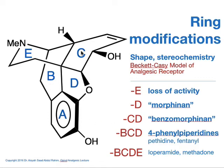If you take out rings B, C, and D, leaving the aromatic ring, the OH group, and also retaining the piperidine ring, this is called the 4-phenylpiperidine ring, and it gives two very clinically important morphine derivatives: pethidine and fentanyl. Pethidine is used in hospital for childbirth — it is the analgesic of choice for childbirth. Whereas fentanyl, due to its structure, promotes the penetration across the blood-brain barrier. Have a look at how good they are compared to morphine, and the structure will tell you the difference between morphine and these new derivatives.